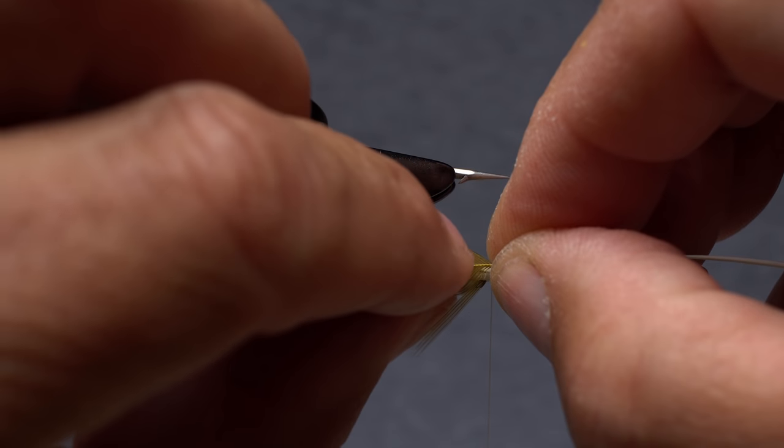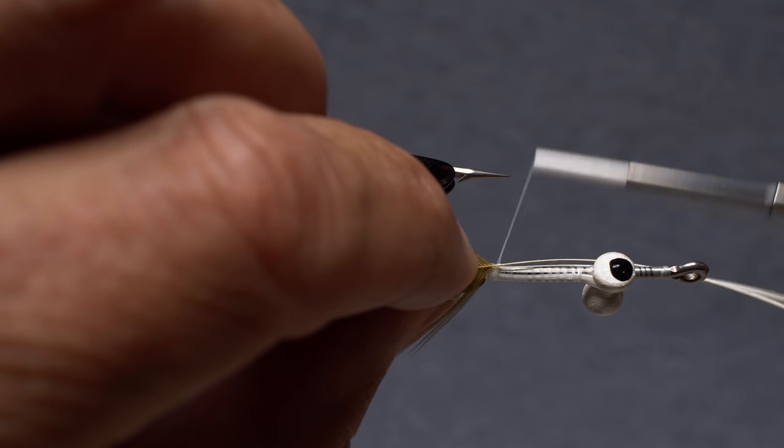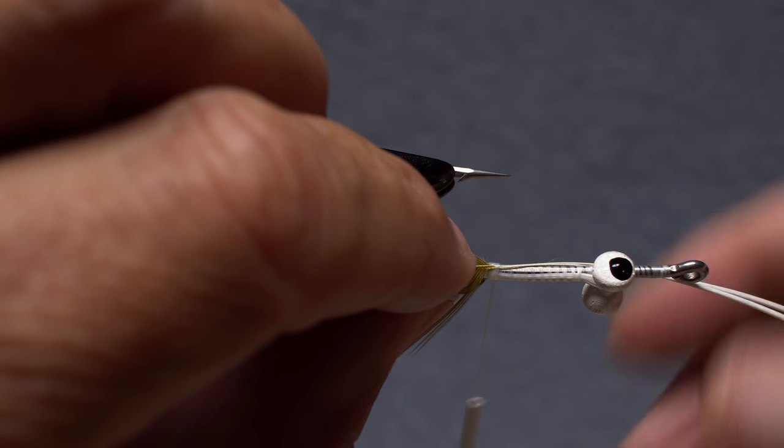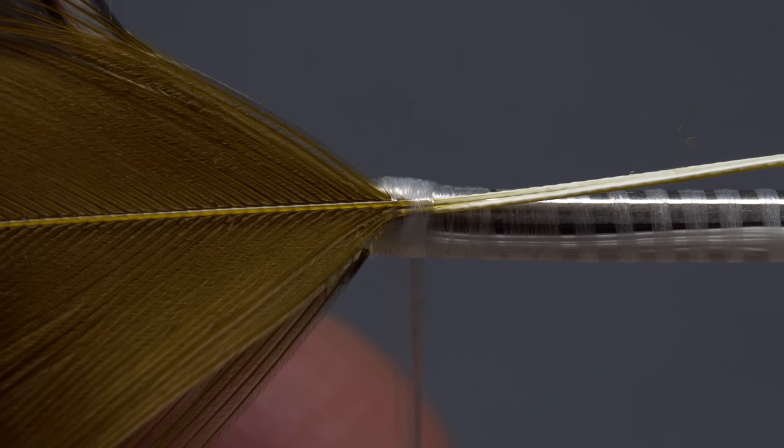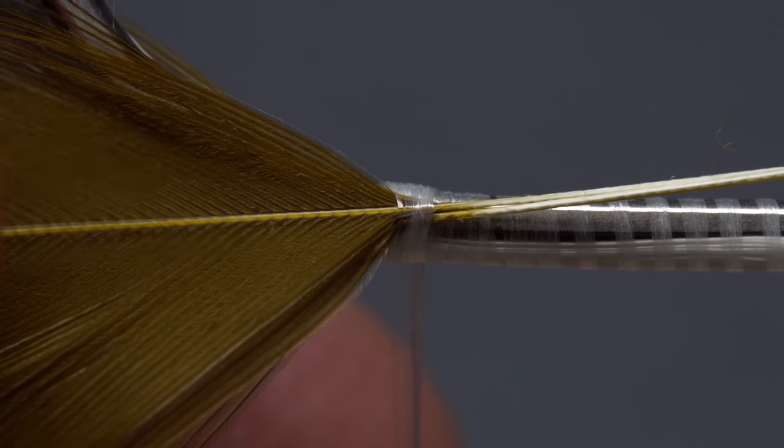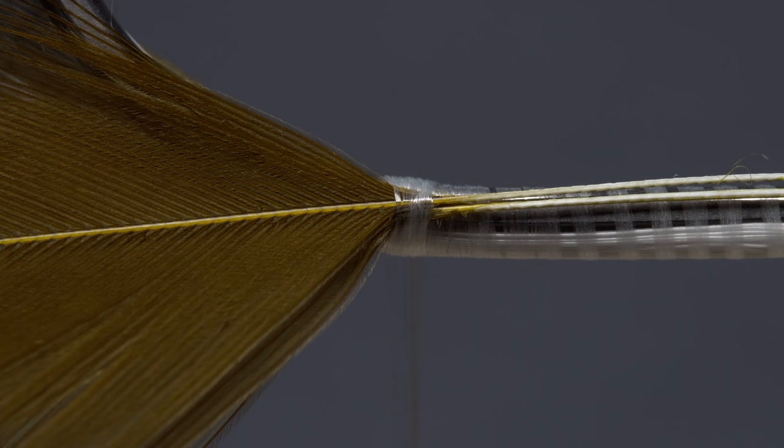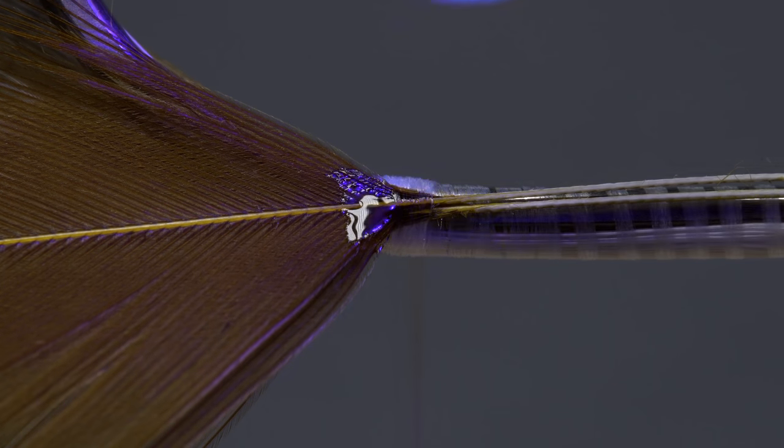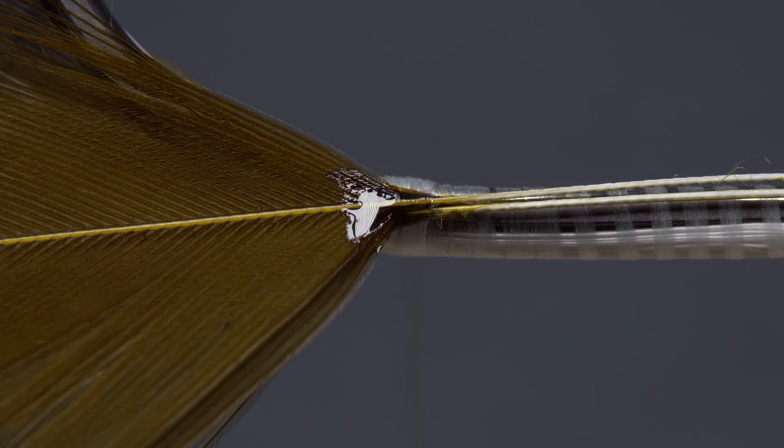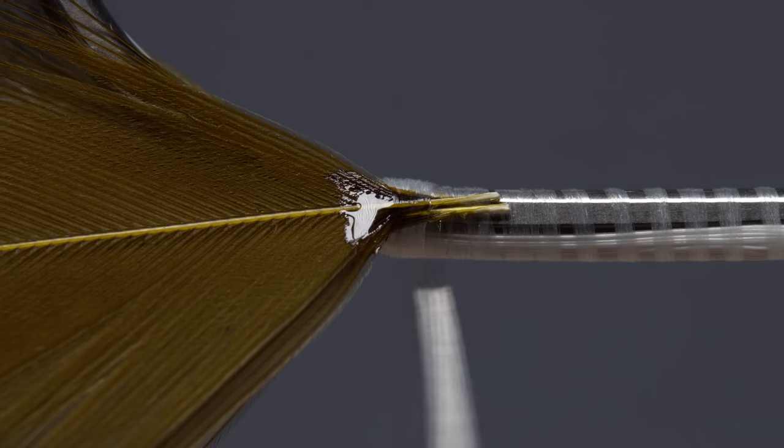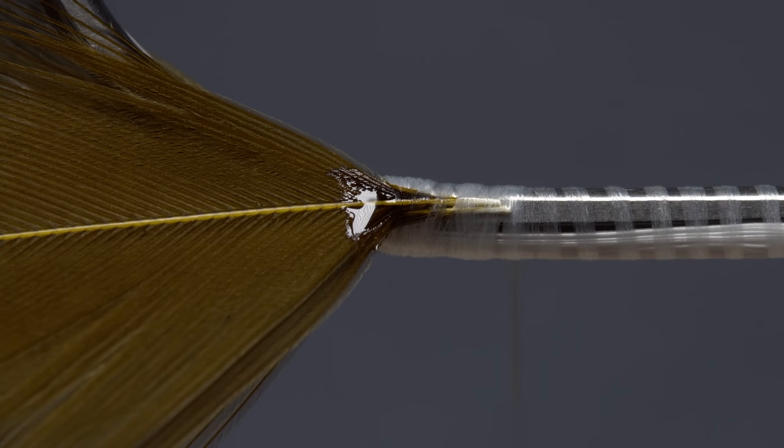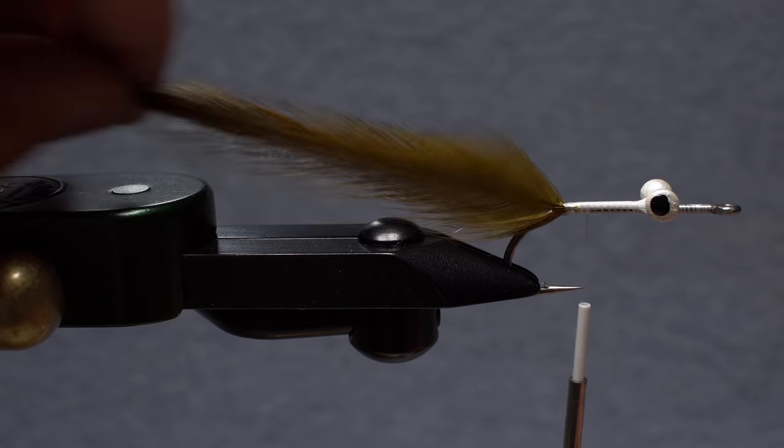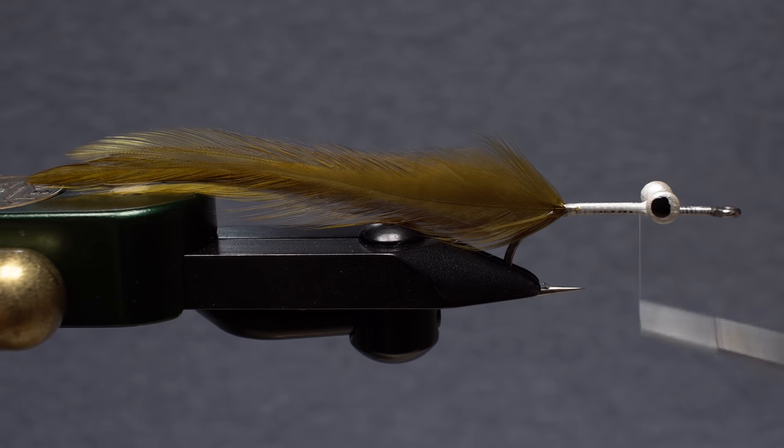Now repeat the same procedure with the remaining two saddle hackles on the far side of the hook. A rotary vise really comes in handy for doing this. Again, pull just the first few fibers under the thread wraps to get the feathers oriented correctly. Then give the intersection a light coat of UV resin and a healthy shot with the UV torch. Here too the feathers should be basically locked into place. Get the hook reoriented back to its normal position, then advance your tying thread forward to just behind the dumbbell eyes.